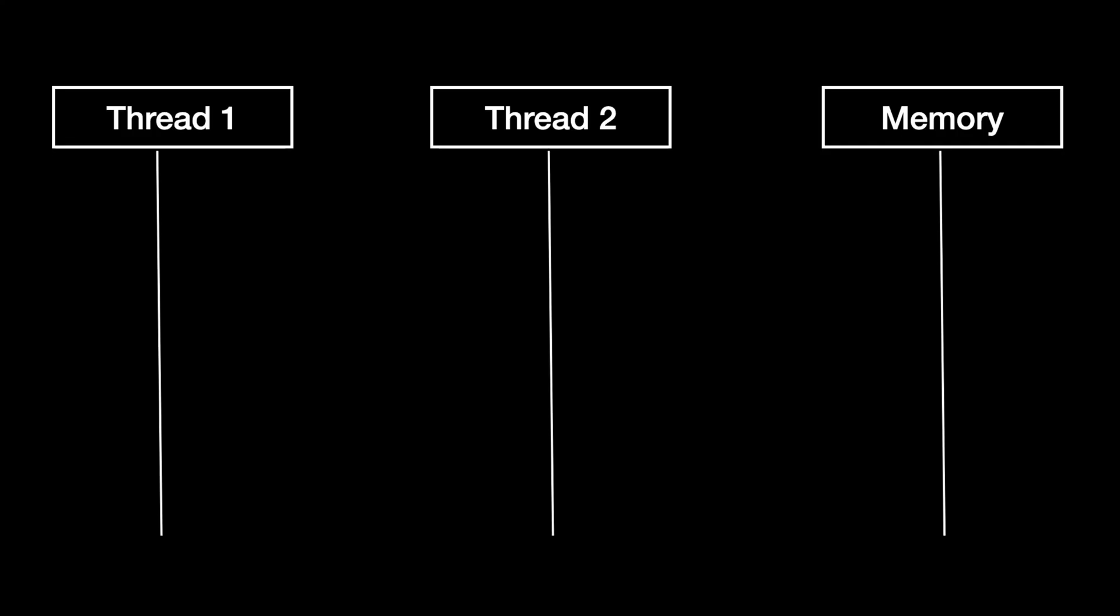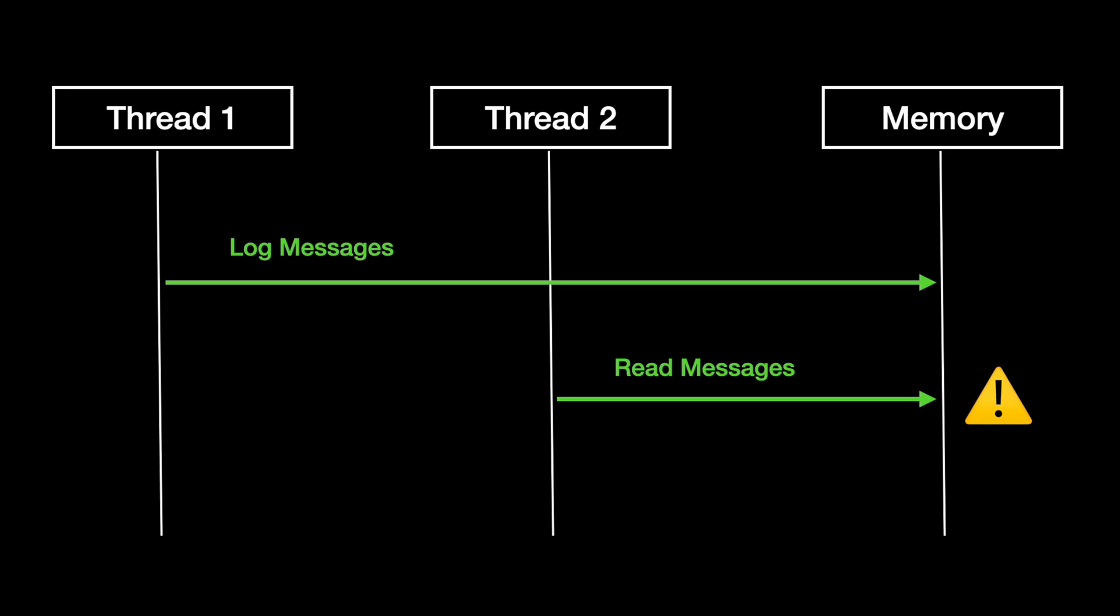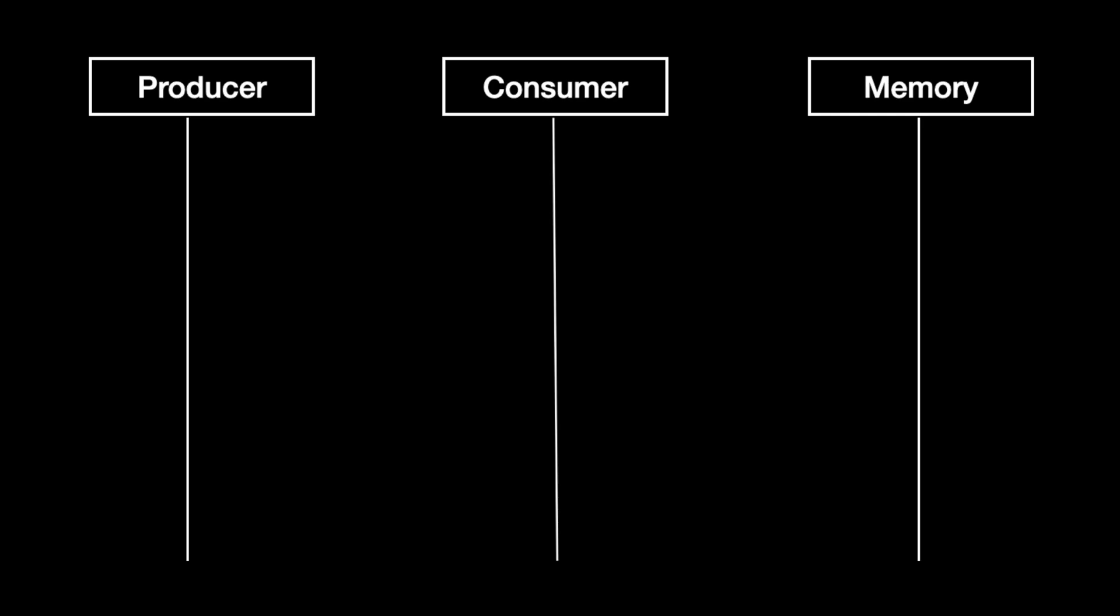Let me give you a real-world example. There was once a bug in a multi-threaded logging system where log messages were written by one thread and read by another. Messages were being truncated sometimes - just timestamps, sometimes the entire message was missing.